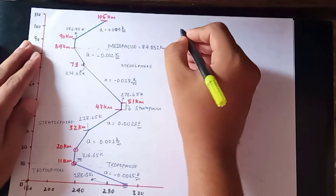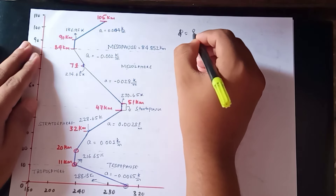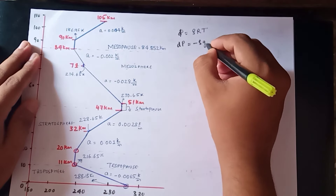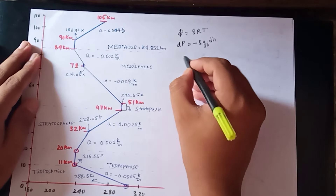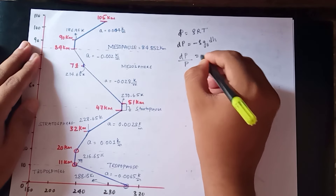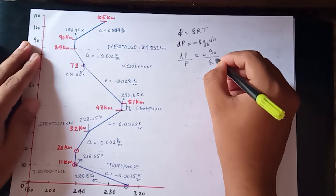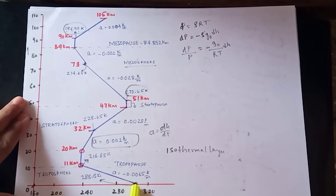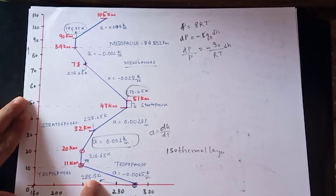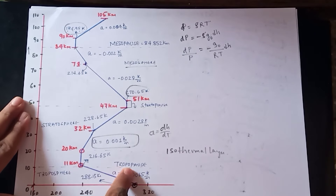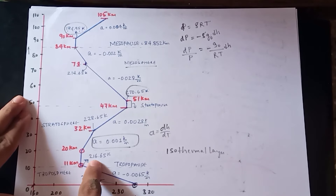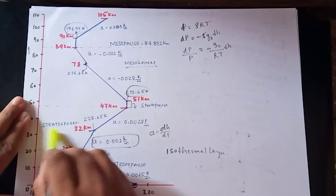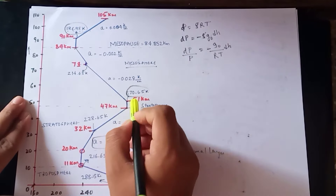Applying the equation of state p = ρRT and the hydrostatic equation dp = −ρ g₀ dh, dividing these gives dp/p = −(g₀ / RT) dh. From the standard atmosphere diagram, the standard temperature is 288.15 K at sea level, dropping to 216.65 K at 11 km (tropopause), then remaining constant up to 20 km.